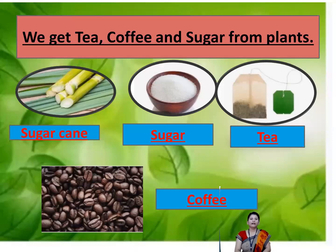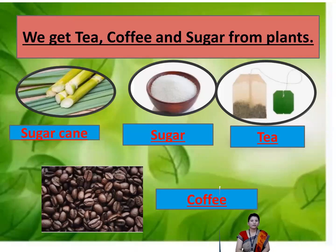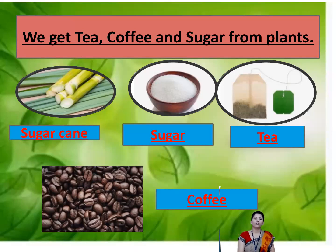We get tea, coffee, and sugar from plants. The first picture shows sugar cane, the second shows sugar, and next are tea and coffee. All these things we get from plants.